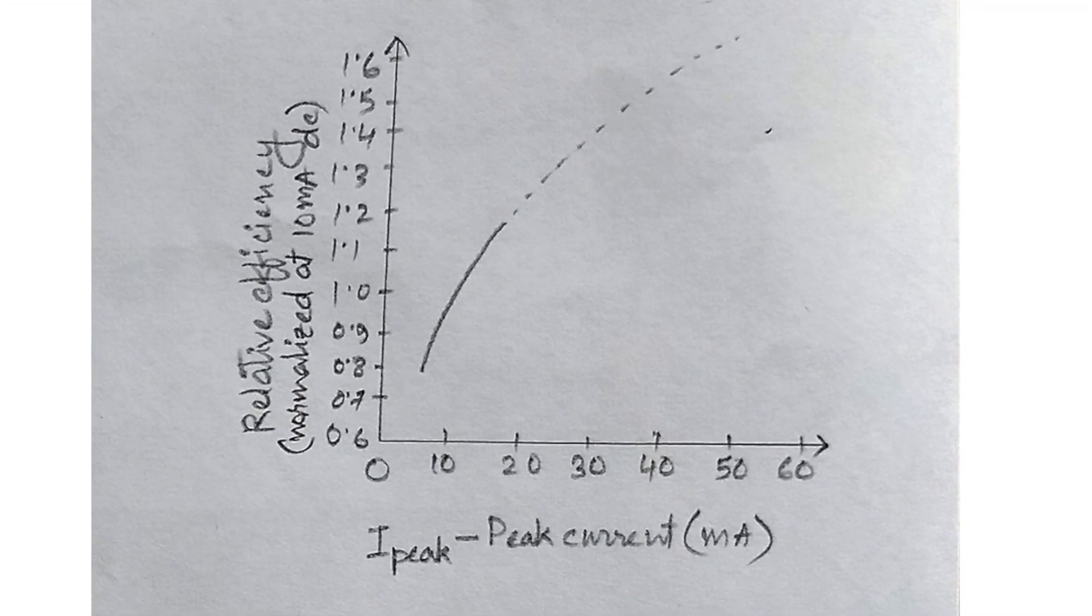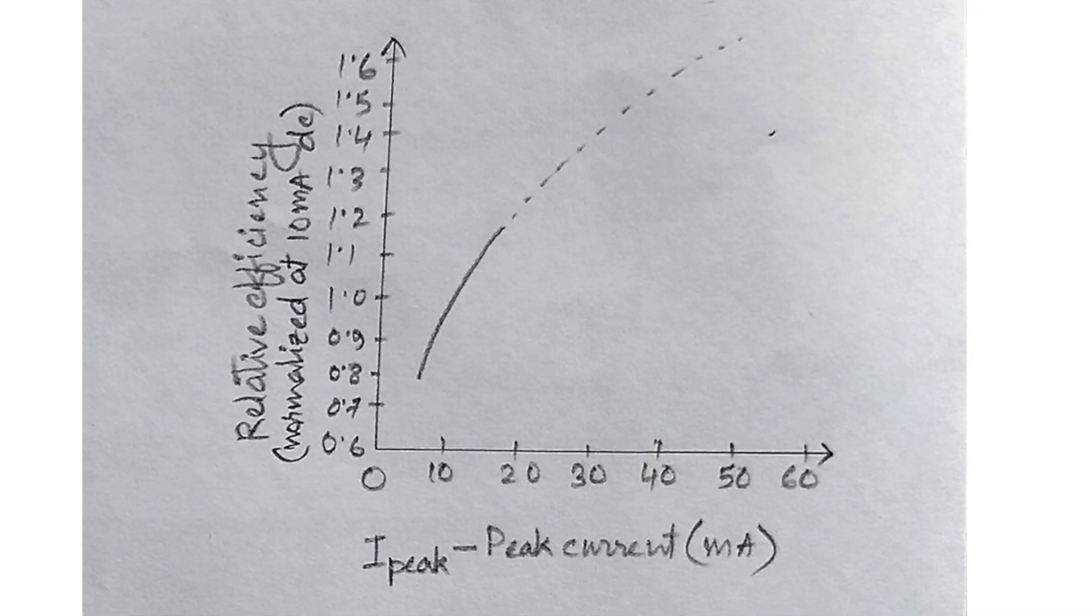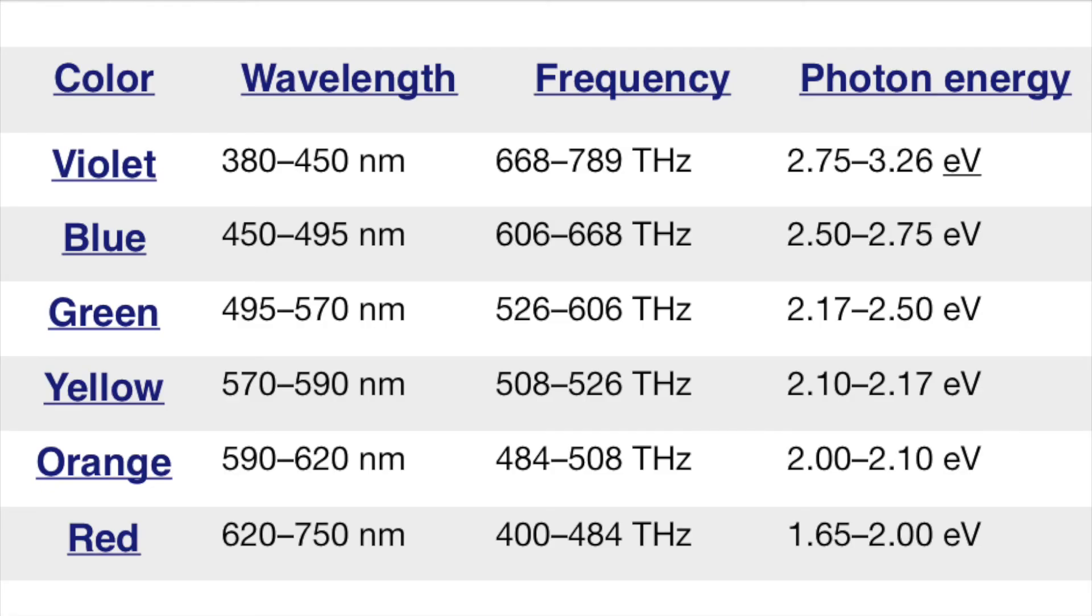The relative efficiency is defined by the luminous intensity per unit current. The various color specifications are as shown in this table.